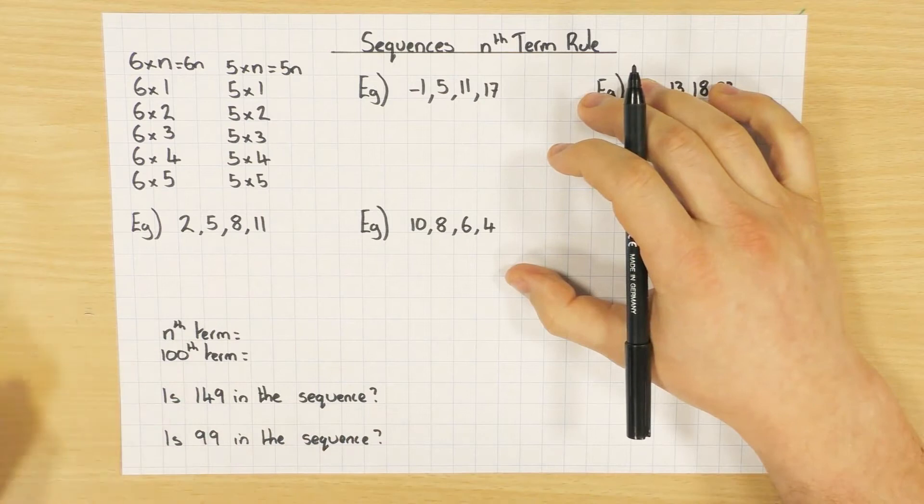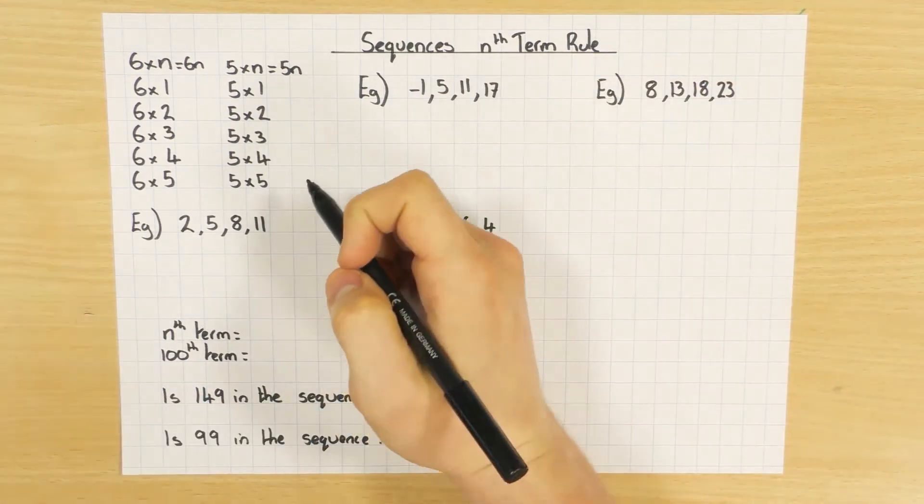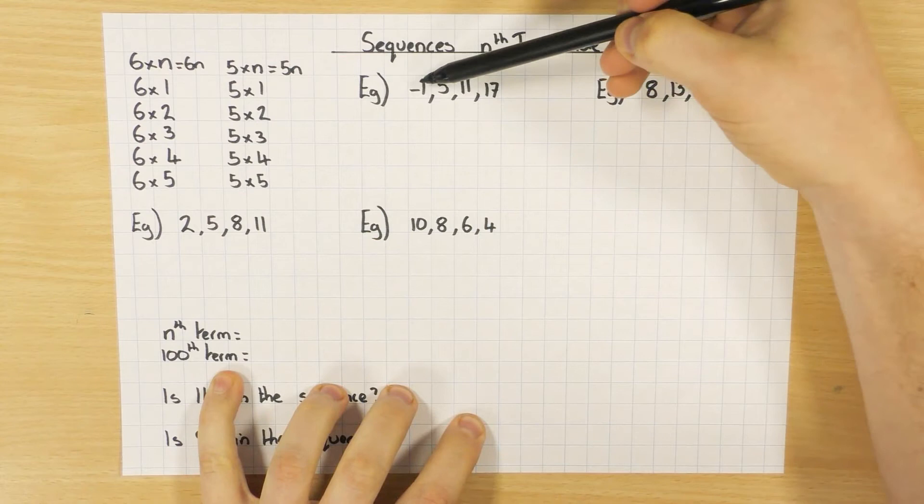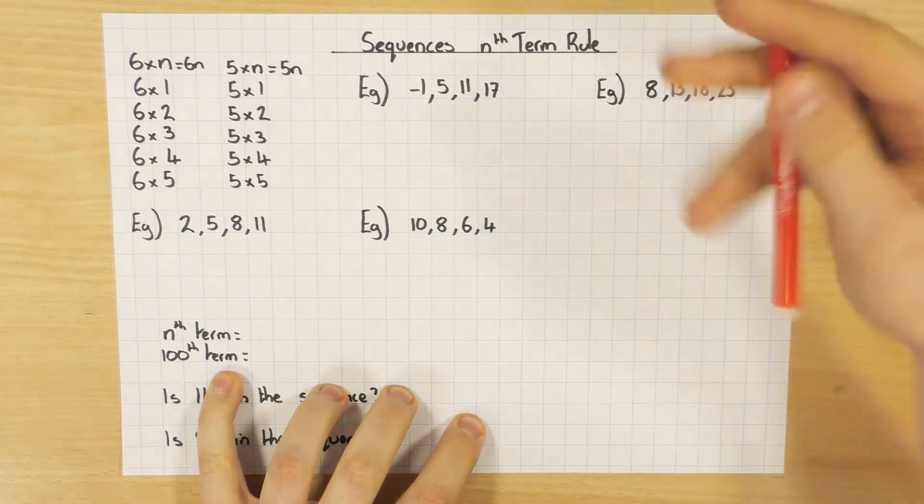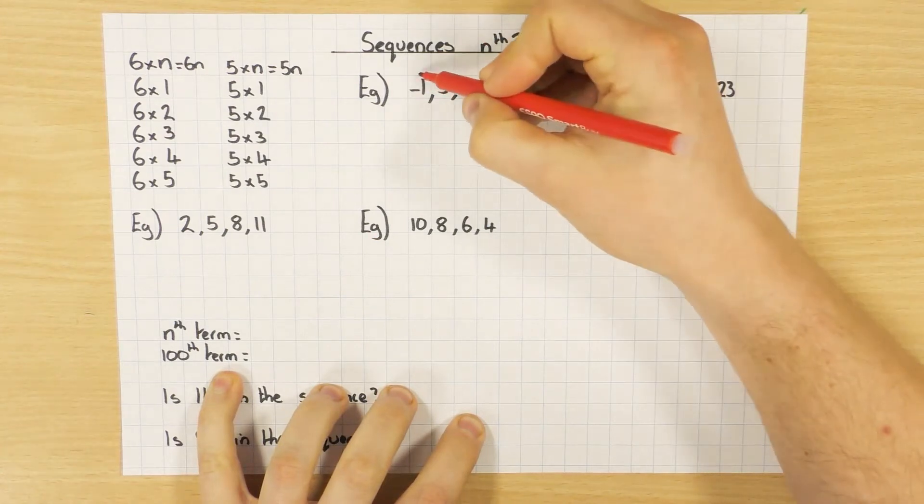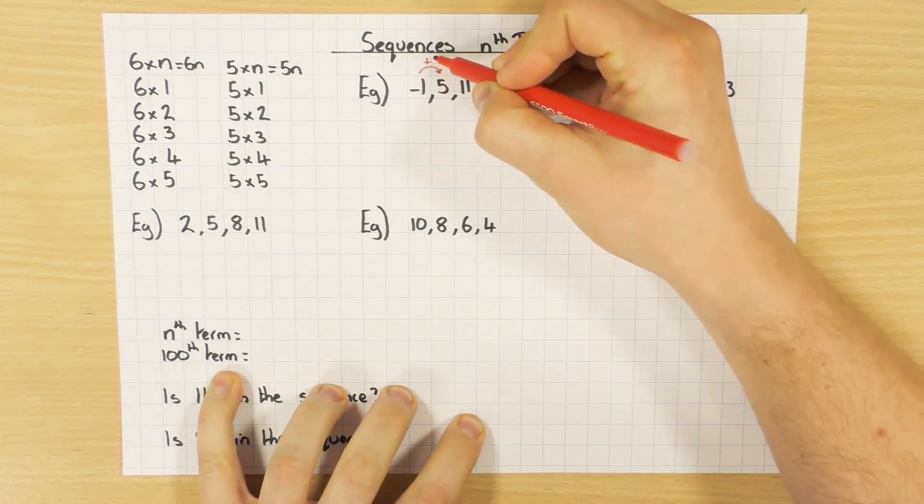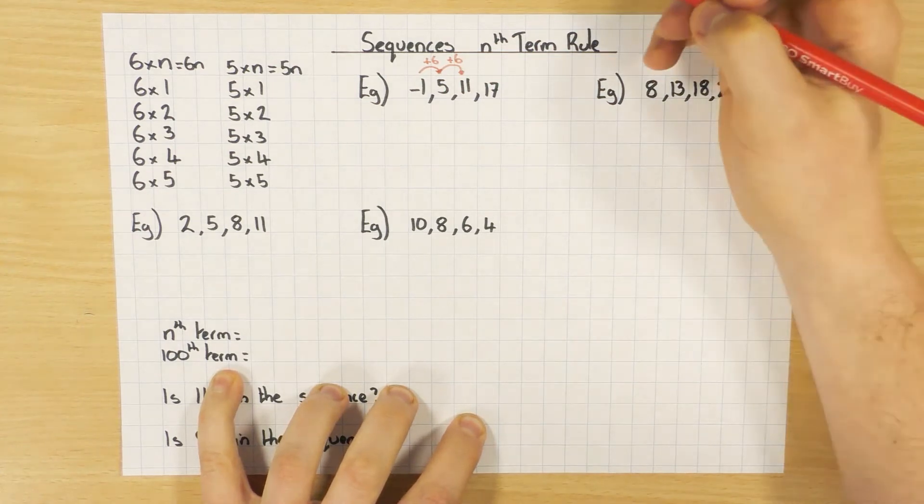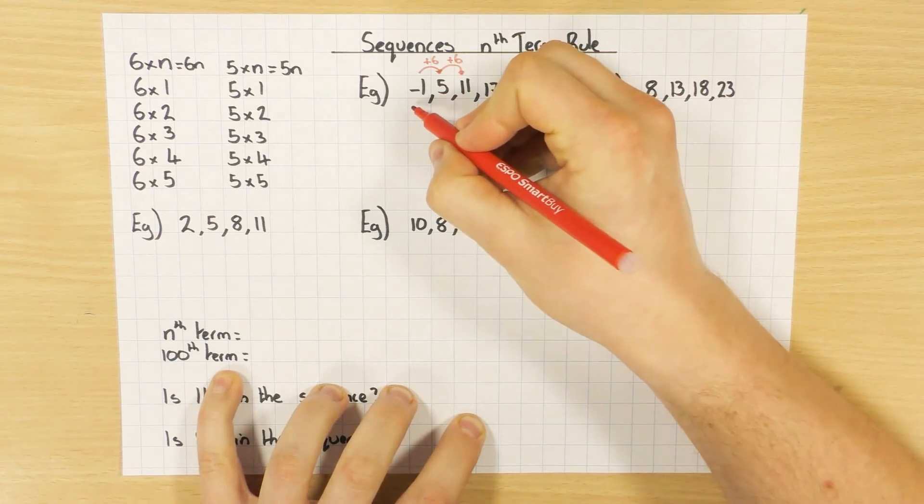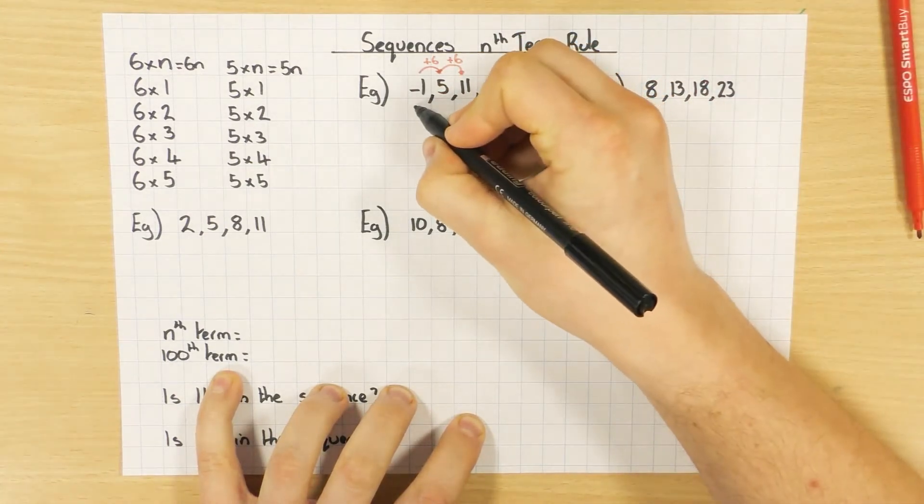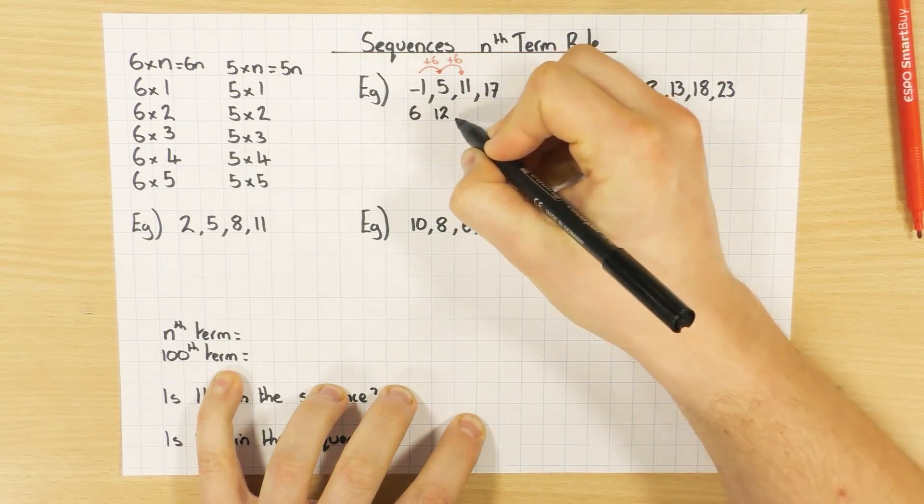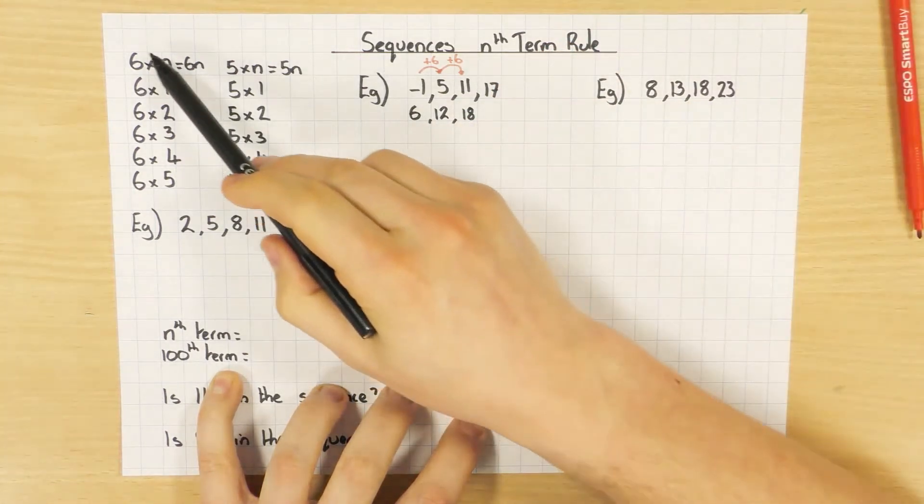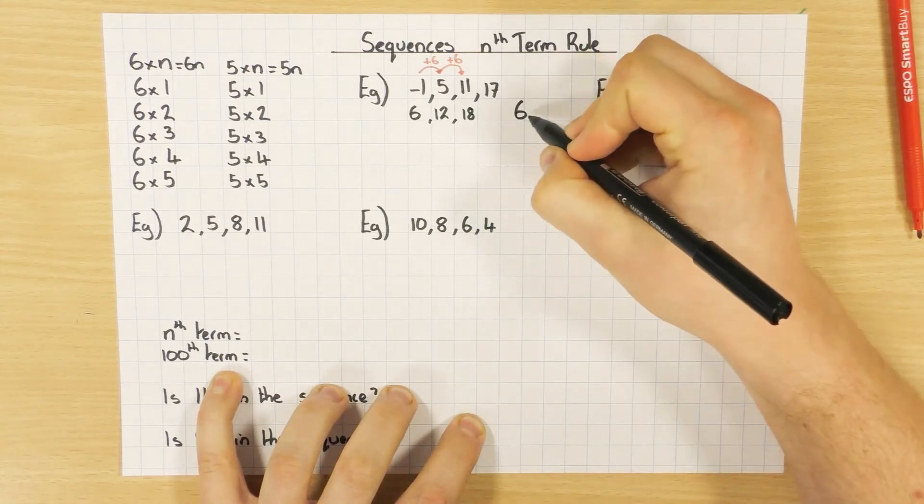I'm just going to get my red pen. When looking at different sequences, if we start off with this one here, we have a look at what it goes up in. So, this first one up here, go from minus 1 to 5, so we're going up 6 each time. Add 6 each time. So, we ask ourselves, what other sequence goes up in 6s? Well, the 6 times table. So, what we do is, we write the 6 times table underneath. So, 6, 12, 18, and so on if you want to. And as we said over here, the nth term rule for the 6 times table is 6n.